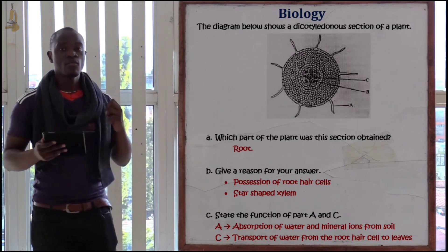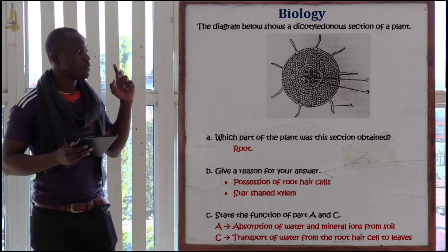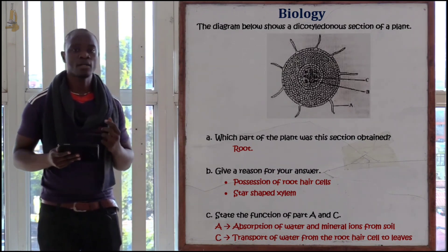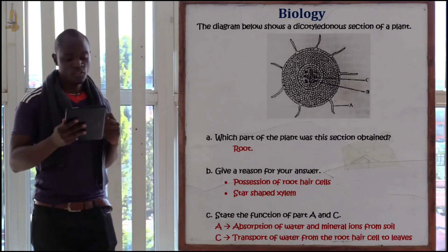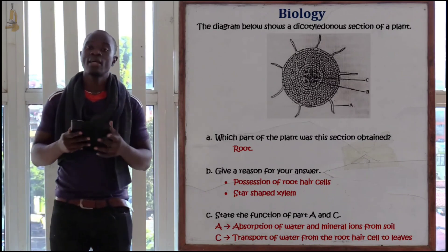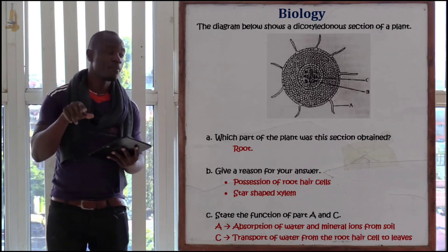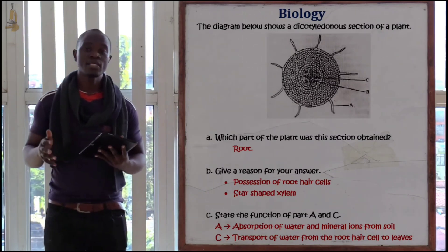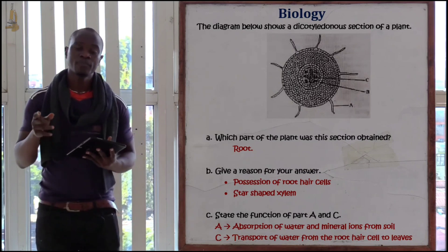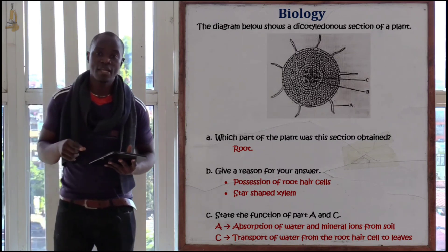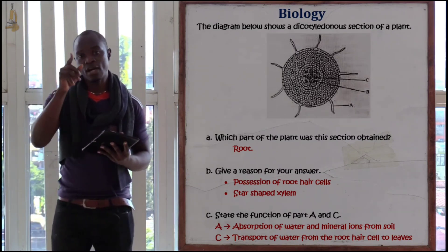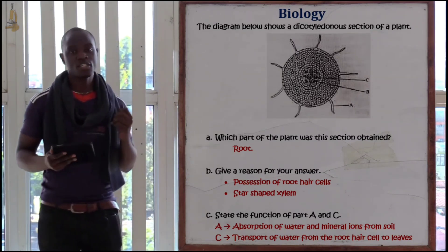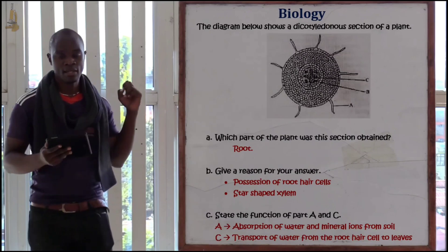For the monocotyledonous plant, we have scattered vascular bundles, as you can see. For the dicotyledonous plant, remember, they are centrally placed and we have a very large star-shaped xylem.